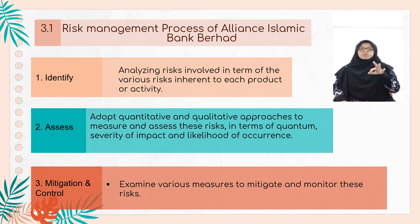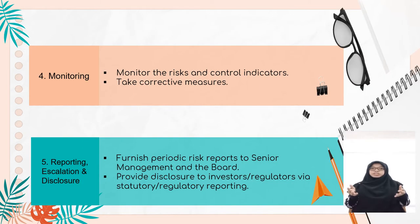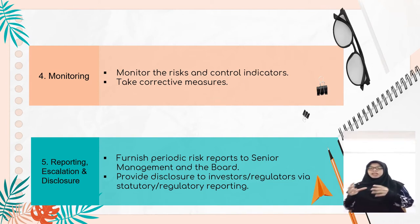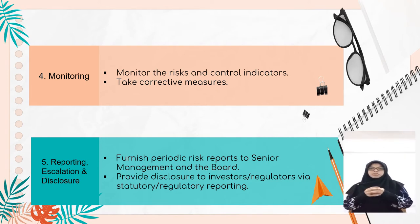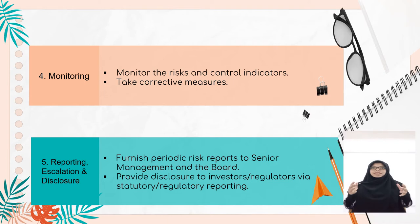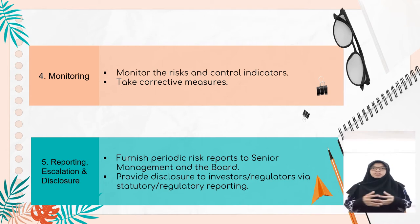The third process is mitigation and control, which involves assuming various measures to mitigate and monitor the risk. The fourth is monitoring, where the bank monitors significant risks and watches adverse trends, then takes corrective measures by reviewing the strategy and risk management process. The last is reporting and escalated disclosure, which furnishes periodic risk reports to senior management and the board, and provides disclosure to investors and regulators via statutory and regulatory reporting.